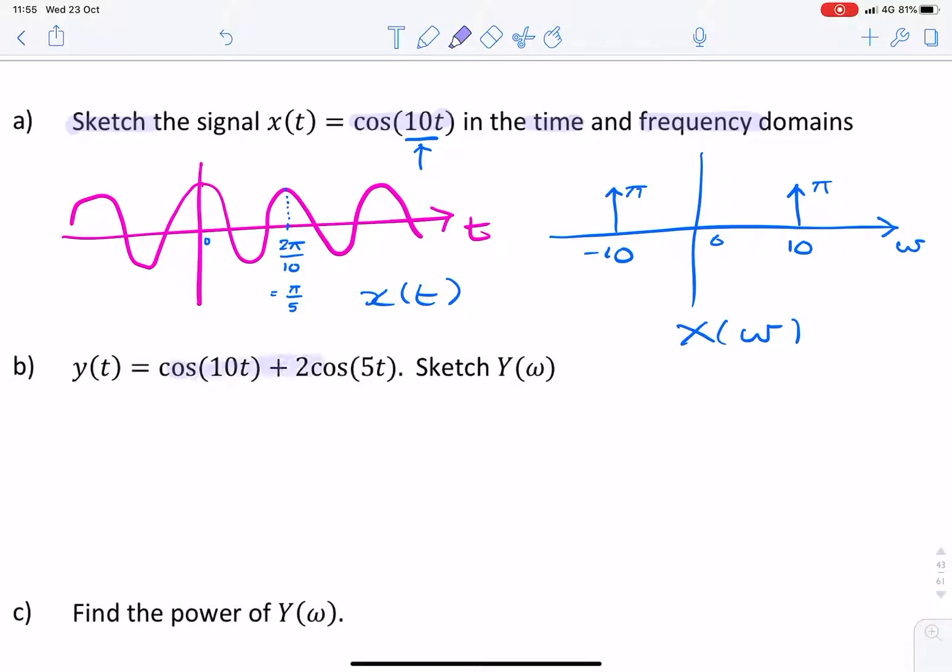Now, we're given two cosines added together, and we're asked to sketch it only in the frequency domain. So, similarly, we label the frequency axis, and we look at the two values of frequency, 10 and 5. So, these are our omegas.